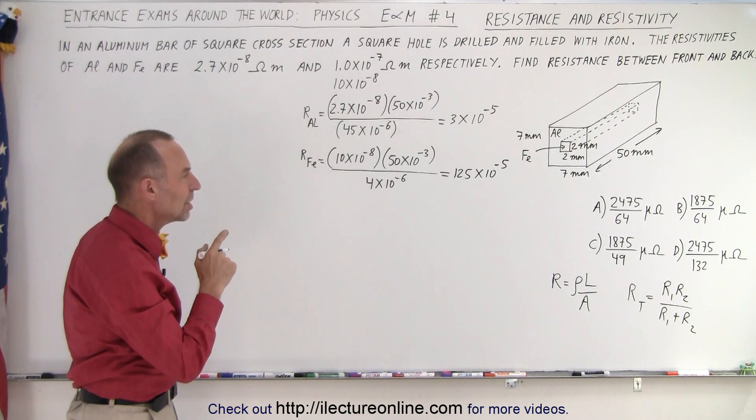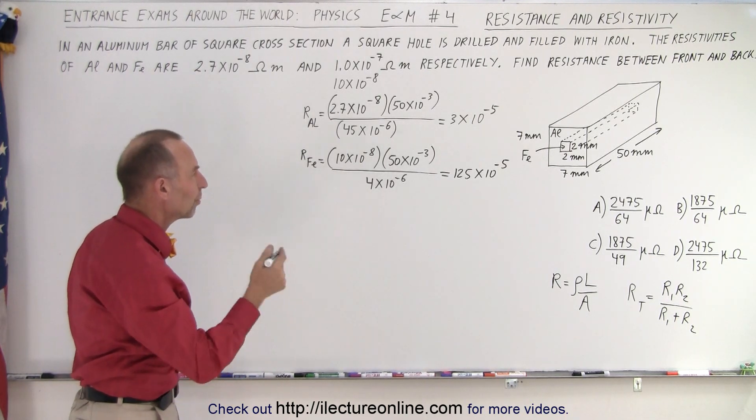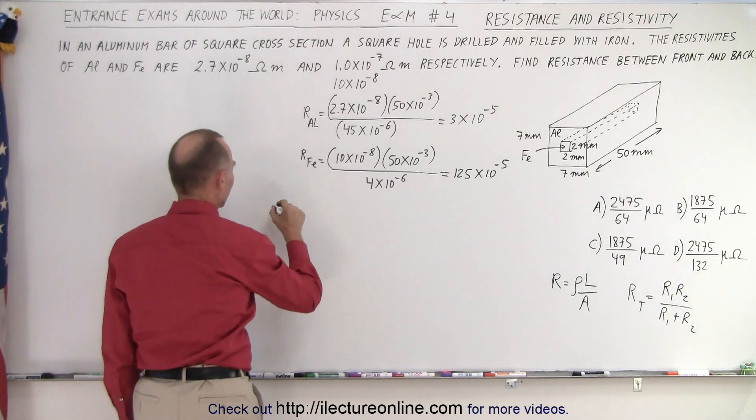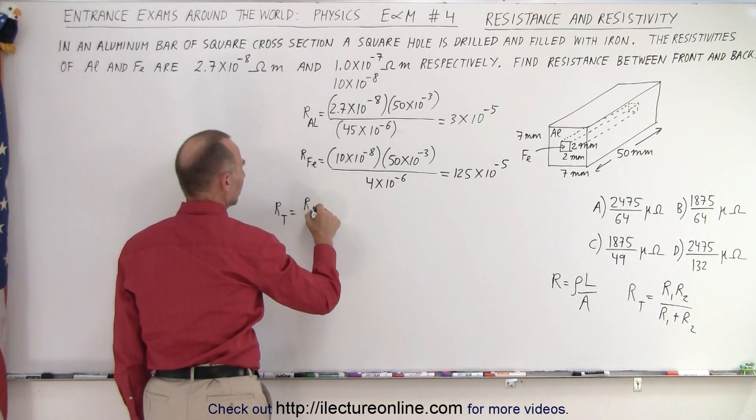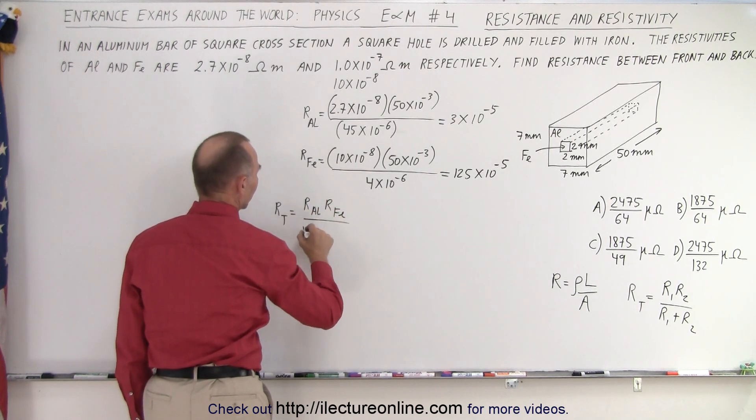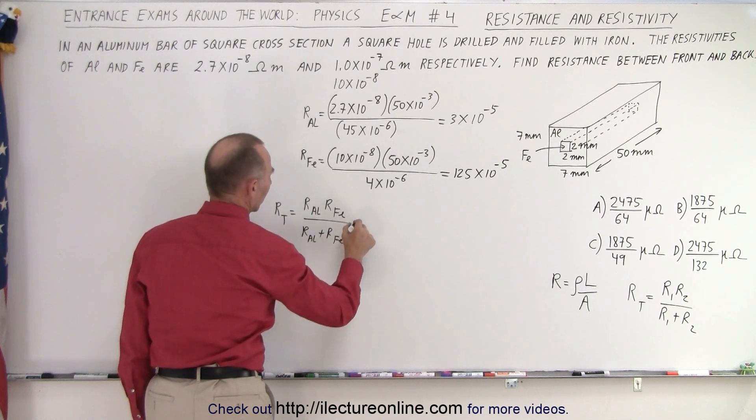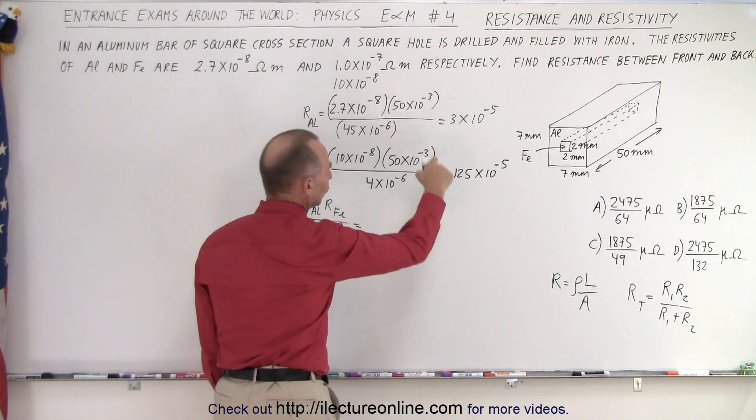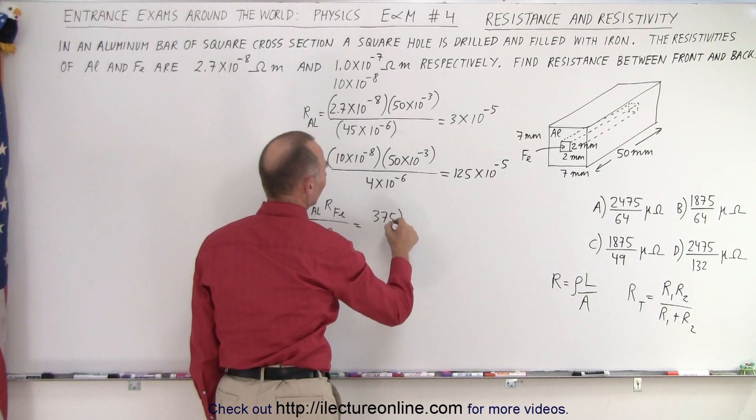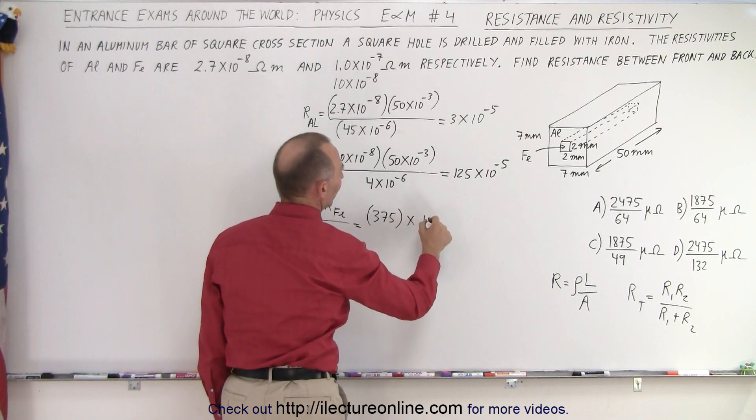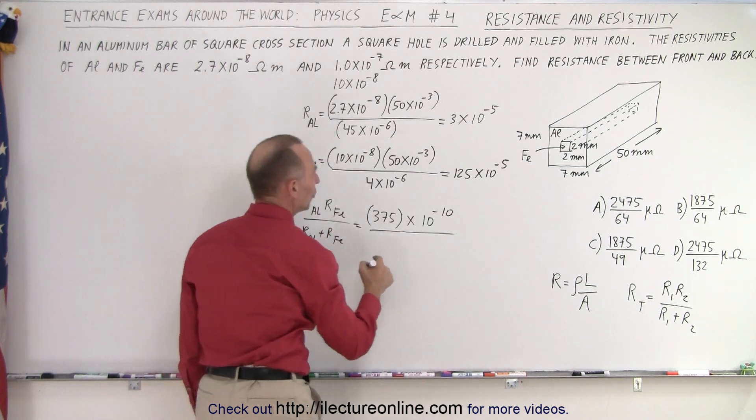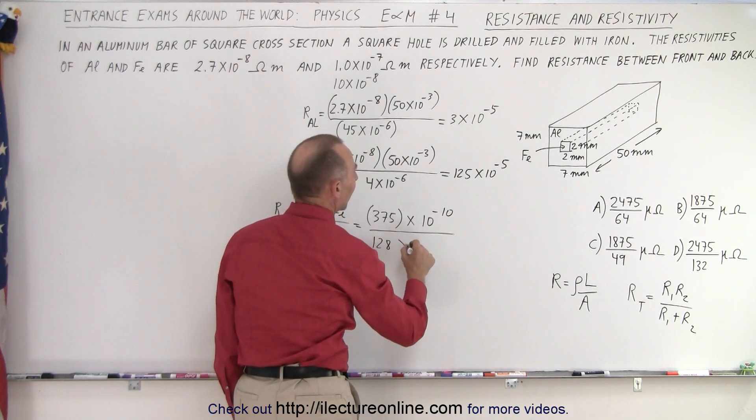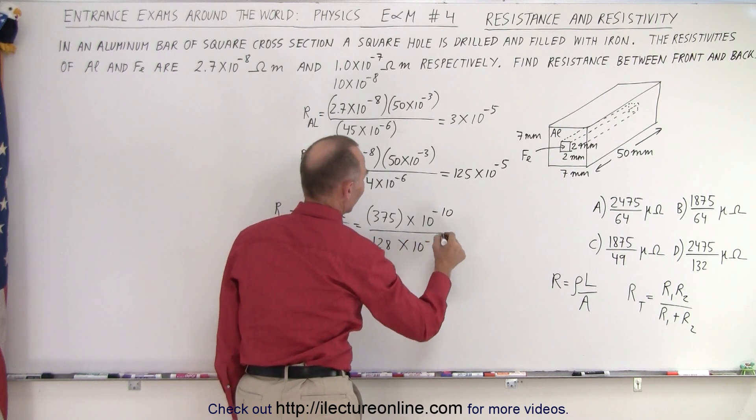Now we need to find the resistance total, which is the product over the sum. So here we have R_total which is going to be equal to R_aluminum times R_iron divided by R_aluminum plus R_iron. When we multiply those two, we get 375 times 10 to the minus 10 divided by when we add the two we get 128 times 10 to the minus 5.